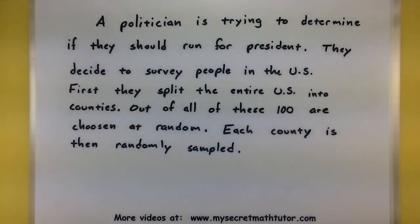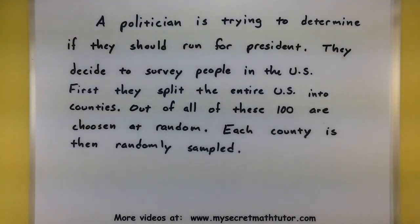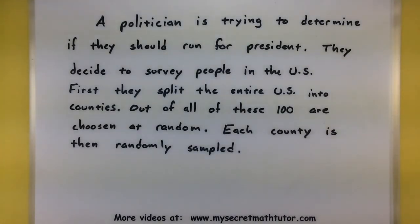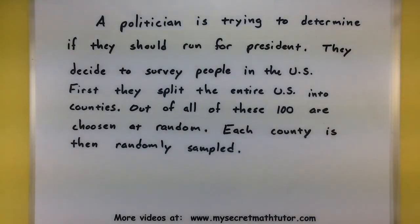For this last example, a politician is trying to determine if they should run for president, and they decide to survey people inside the United States. First, they split the entire U.S. into counties. There are many counties in the U.S., but out of all of those counties, they choose 100 at random. Then, from each of those 100 counties, they do a random sample inside each one.